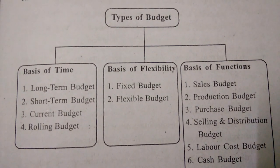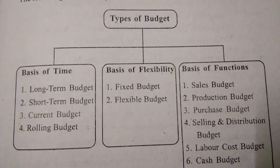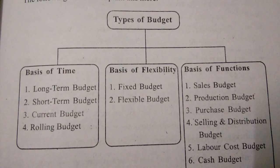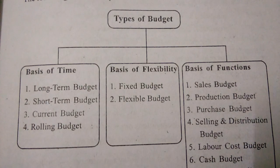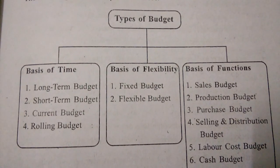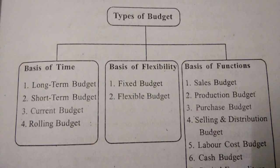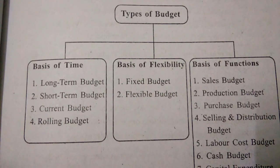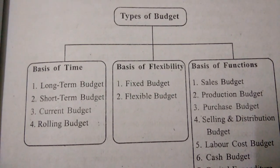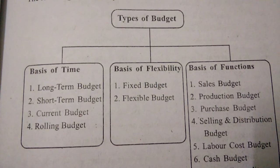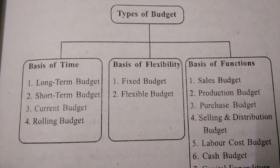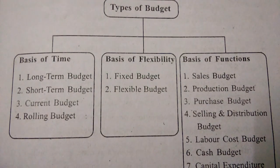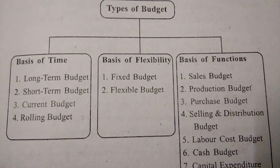Here one more topic: types of budgets in budgetary control. Budgets are classified on three bases. Basis of time: four budgets — long term budget, short term budget, current budget, and rolling budget. Basis of flexibility: two types — first, fixed budget, and second, flexible budget.